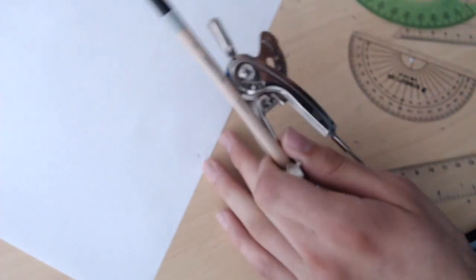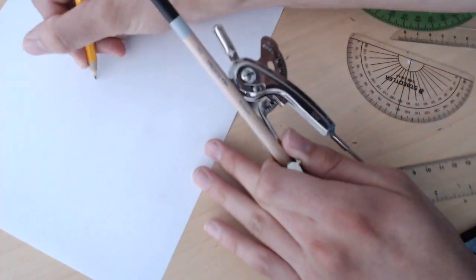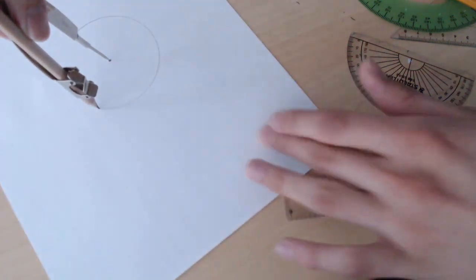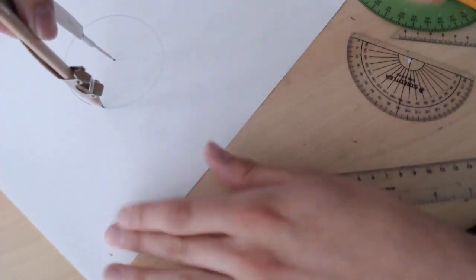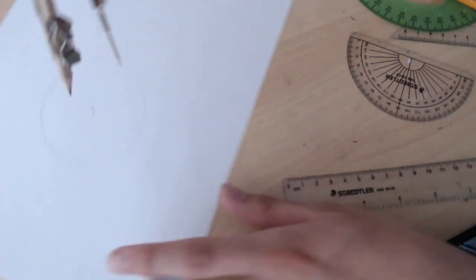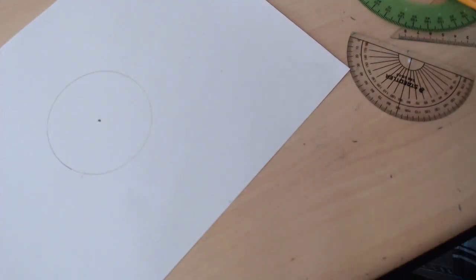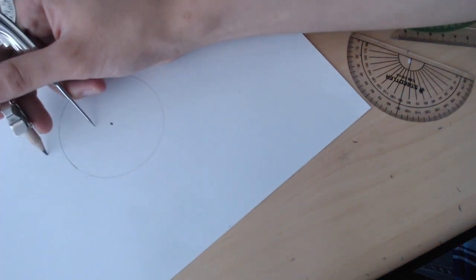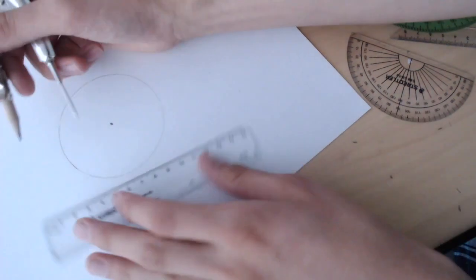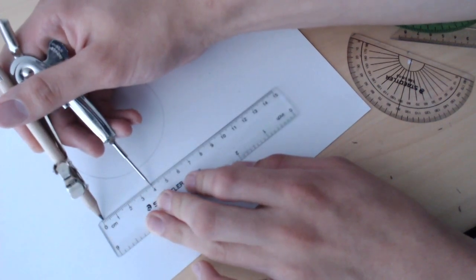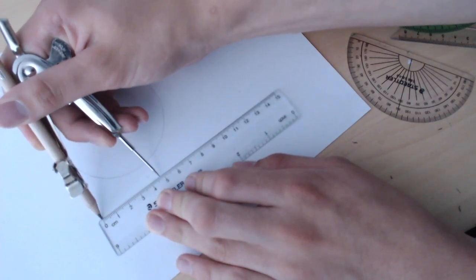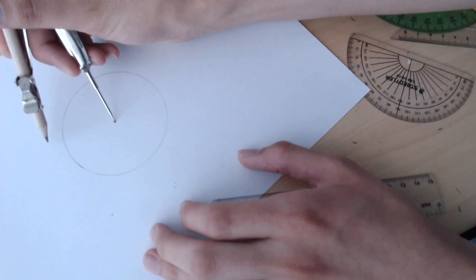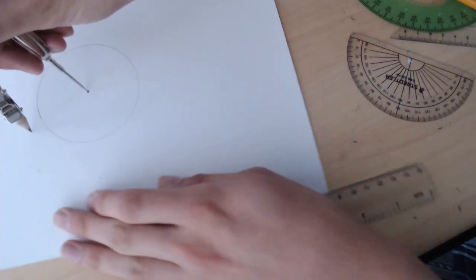So what we want to do is mark out a center point. And since we want to have our teeth on our gear eventually going to be one centimeter tall, we are going to mark out a five centimeter circle. This will allow us to have teeth that are one centimeter tall, making the total gear radius five centimeters.